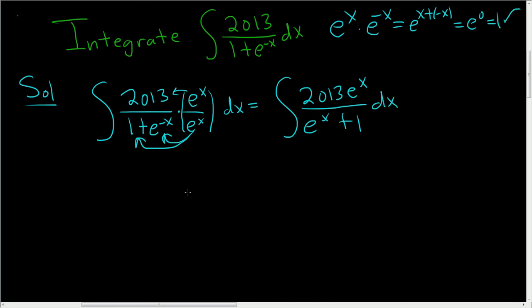Now we're in a place to make a substitution, right? So we're going to set u equal to e to the x plus 1. So du is just e to the x dx.